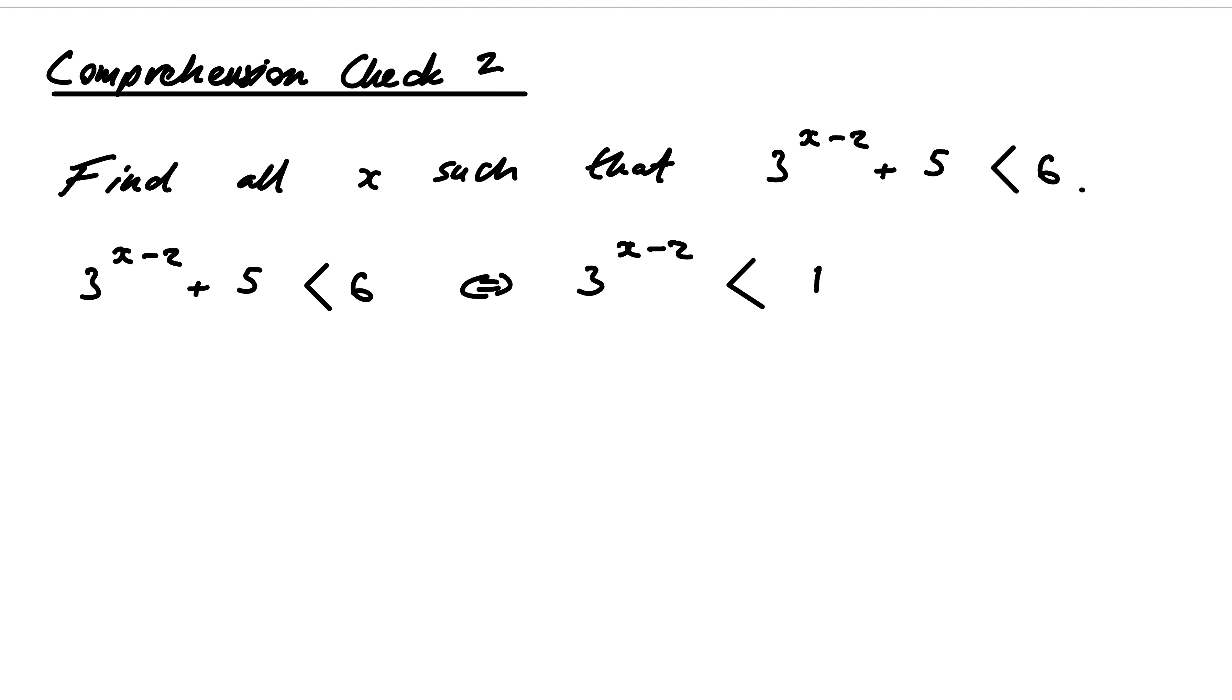And my logarithms, remember, are a really useful thing to apply here because it would undo that 3 to the power x minus 2. So let's do log to the base 3 to kind of undo this exponent. And remember, log with base 3, because 3 is bigger than 1, this is going to be an increasing function, which means it preserves the inequality. Very important.